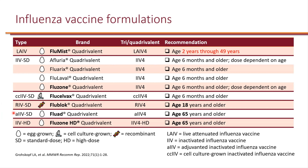Specifically for elderly patients who typically respond less to vaccines, we have a few formulations that boost the response. One is the adjuvanted inactivated influenza vaccine — Fluad — which uses adjuvants to increase immunogenicity. The 'ad' in the name stands for adjuvant. This is for age 65 and older. We also have the traditional inactivated influenza vaccine in a higher dose — HD stands for higher dose.